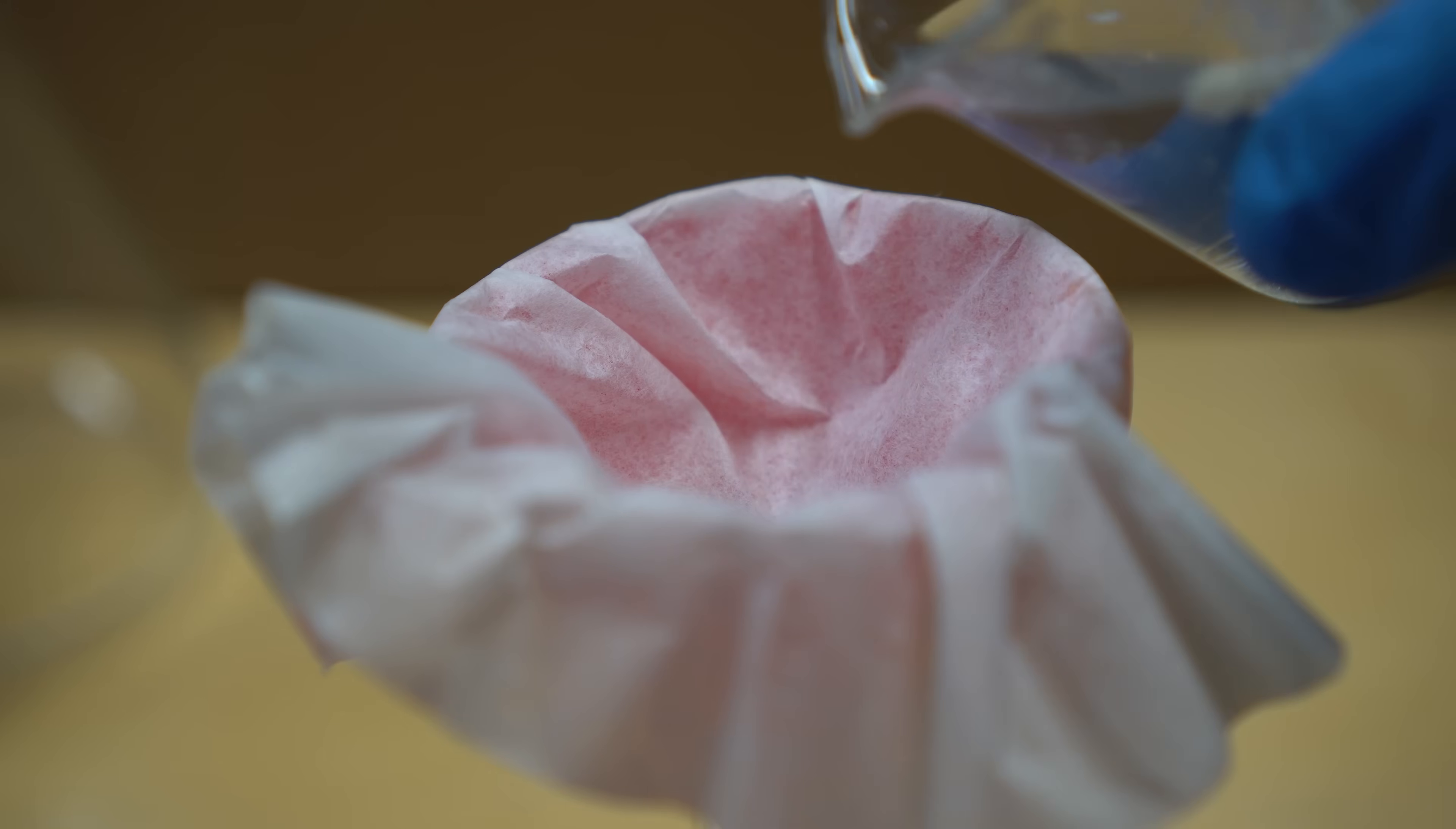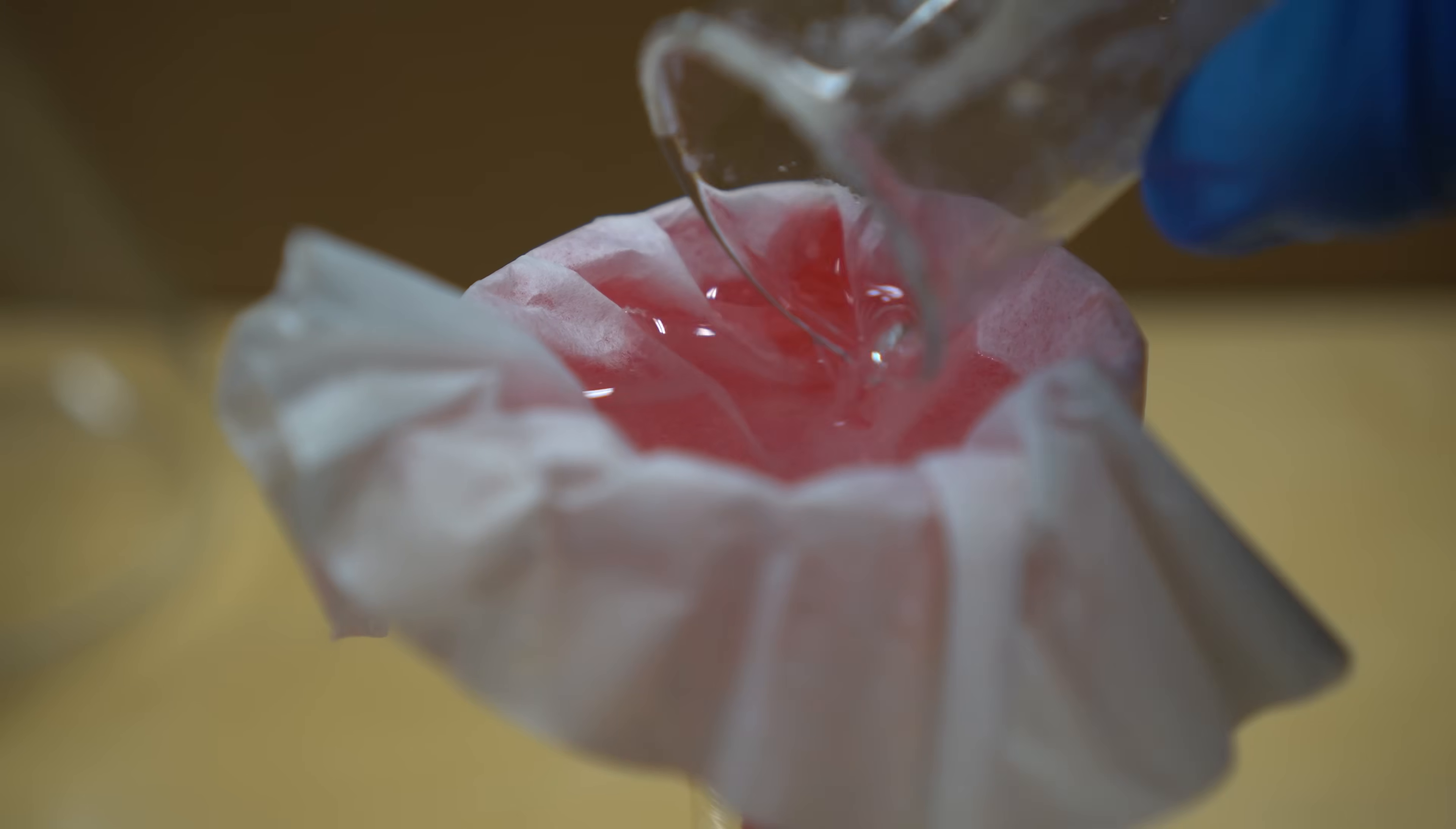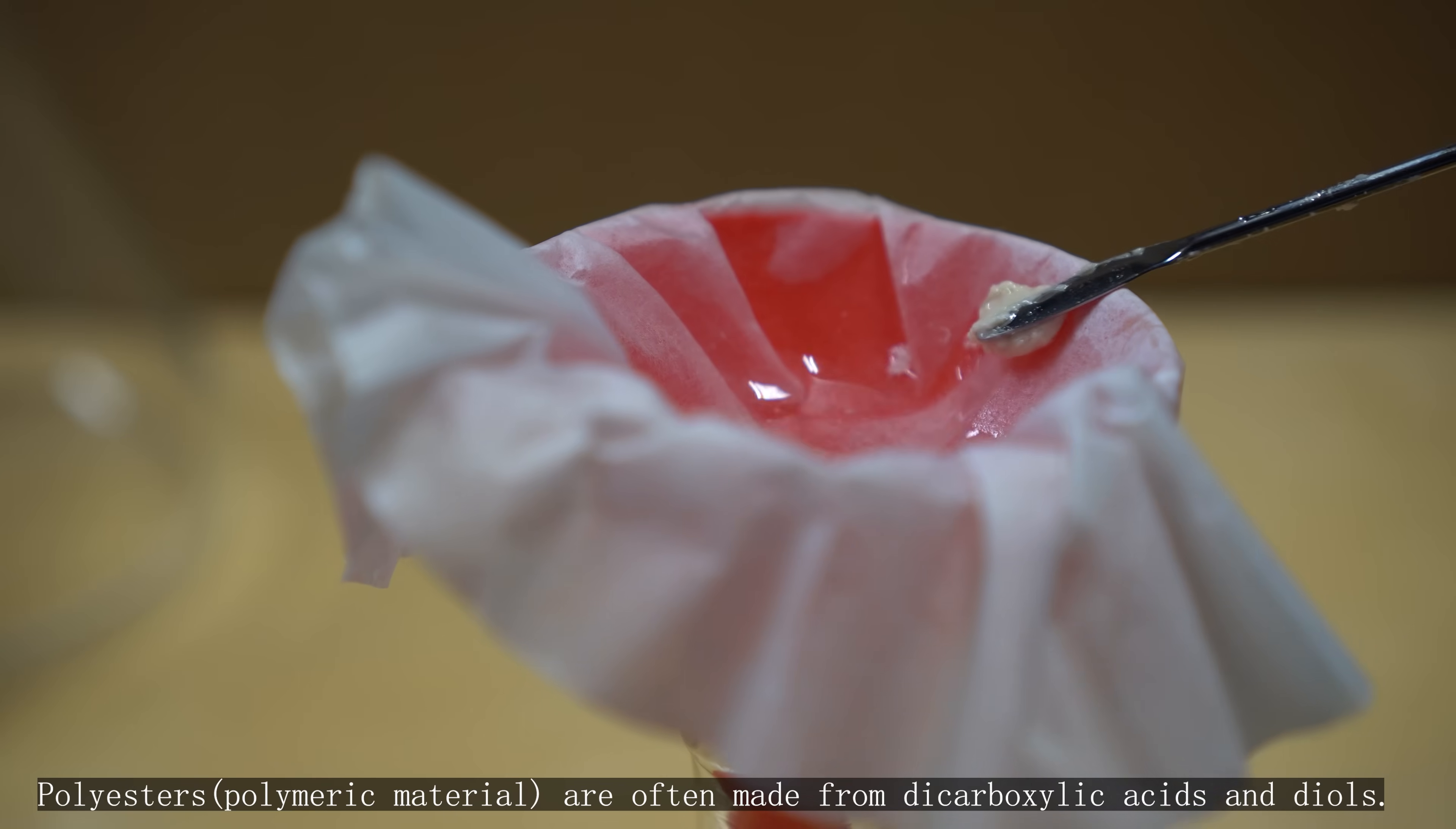I then filtered the solution using a coffee filter and just a regular old funnel, and I waited until the solution was fully filtered and collected the filtrate in a new 150 milliliter Erlenmeyer flask. Here's one of the major impurities that I saw when mixing, and it's like this polymer sticky beige goop that I got from it.